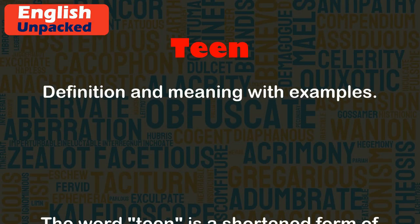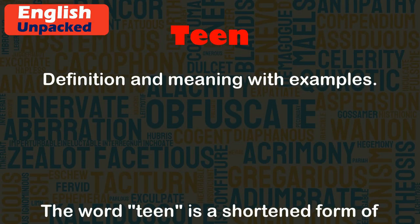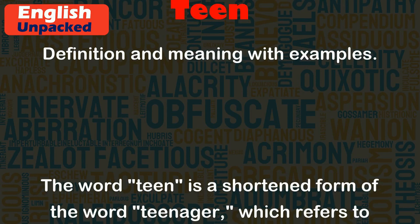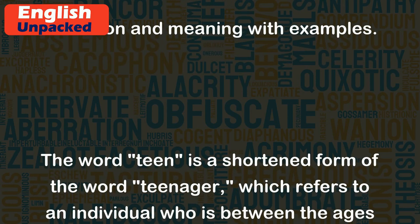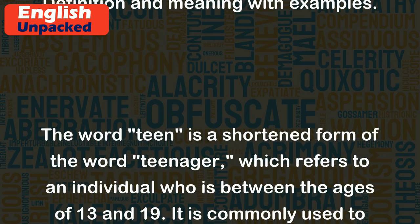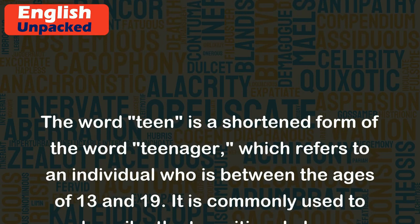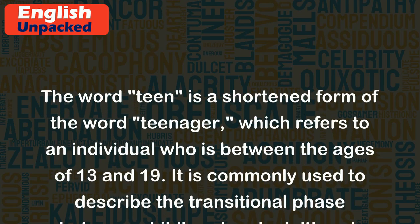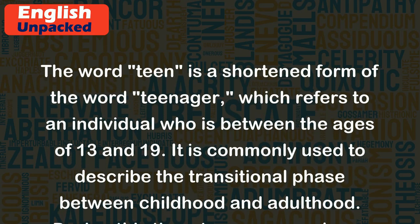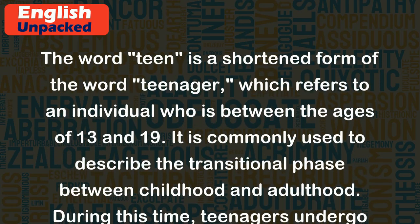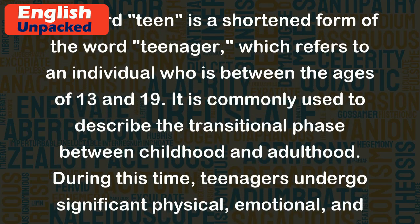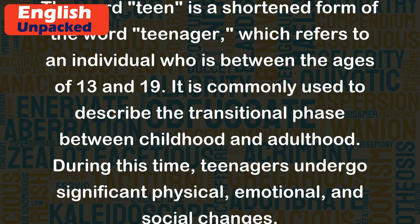The word "teen" is a shortened form of the word "teenager," which refers to an individual who is between the ages of 13 and 19. It is commonly used to describe the transitional phase between childhood and adulthood.